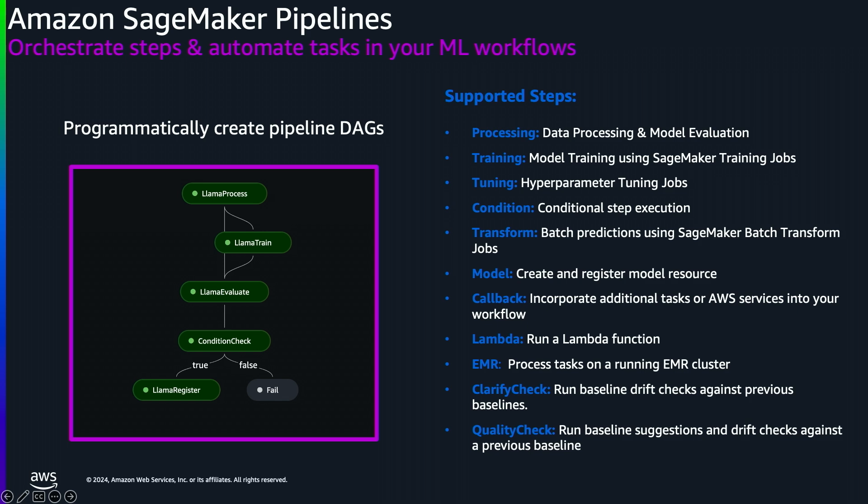Pipelines includes typical steps you'd expect from a pipeline tool, such as conditional steps and the ability to explicitly define custom dependencies between steps. Pipelines also includes native steps that allow for easy integration with most of the SageMaker features commonly used in these automated workflows. These supported steps are kept current with the latest SageMaker capabilities and include things like processing for data preparation, SageMaker training jobs for model training, but also extend to other AWS services like Lambda or EMR, as well as the flexibility to include tasks on other AWS services or outside of AWS through the callback step.